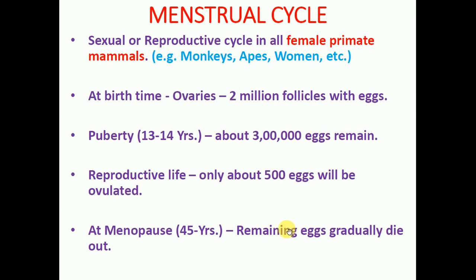So we have to understand here what is the menstrual cycle. The menstrual cycle is the sexual or reproductive cycle which occurs in female primate mammals only — for example, monkeys, apes, and women. In these females, the reproductive or sexual cycle is called the menstrual cycle.